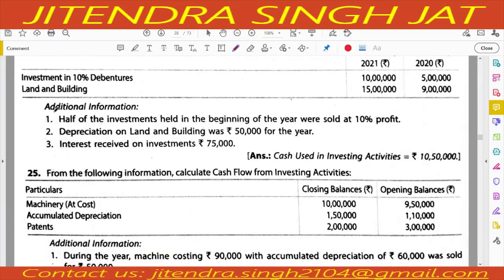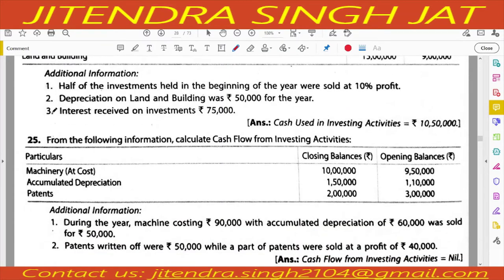Very good question — question number 25. From the following information, calculate cash flow from investing activity. Closing and opening balances are given for machinery, accumulated depreciation, and patents. Additional information: during the year, a machine costing 90 with accumulated depreciation of 60 was sold for 50. Patents written off were 50, while part of patents were sold at a profit of 40. We need to prepare both machinery and patent accounts.